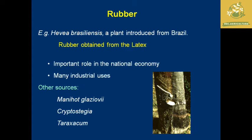Regarding rubber: Hevea brasiliensis is a plant introduced from Brazil, and latex is obtained from this plant. Rubber plays an important role in the national economy, with many industries dependent on rubber materials. Other sources of rubber include Manihot glaziovii, Cryptostegia, and Taraxacum.